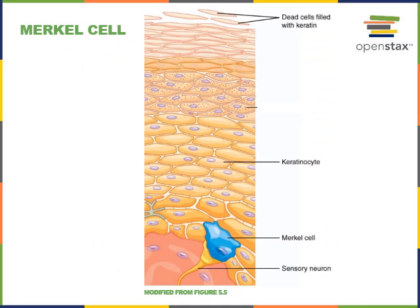The Merkel cell is a specialized sensory receptor found in the stratum basale of the epidermis, which is sensitive to changes in the shape of the epidermis that stretch and pull on the Merkel cell. Merkel cells communicate with sensory neurons that relay information into the central nervous system to contribute to somatosensation — the sense of touch, body position, and the sense of touch in our skin.